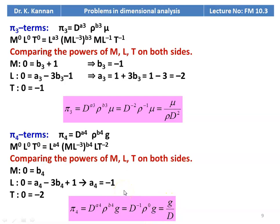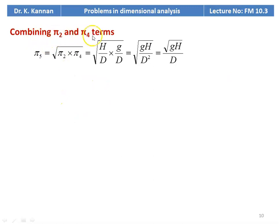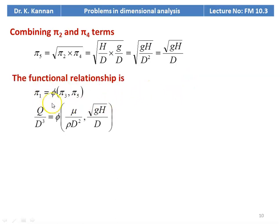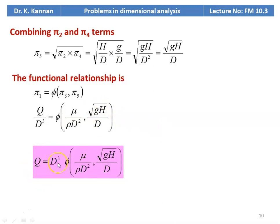All four pi terms are calculated. We combine pi2 and pi4: pi5 = √(pi2 · pi4) = √(H/D · g/D) = √(gH)/D. The functional relationship becomes: Q/D³ = f(mu/(rho·D²), √(gH)/D), therefore Q = D³ · f(mu/(rho·D²), √(gH)/D).